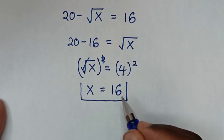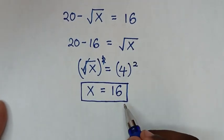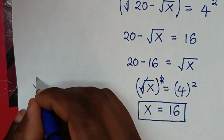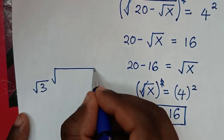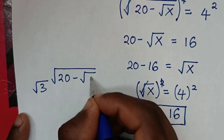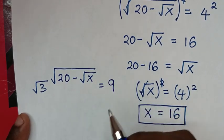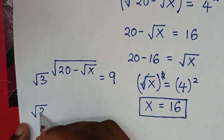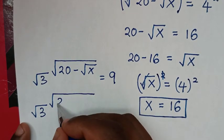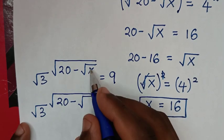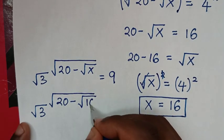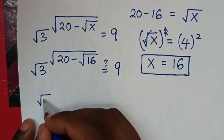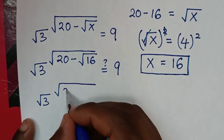Therefore, x equals 16 is the final answer. To verify this, we substitute x equals 16 back into the original equation: √3 raised to the power of (√20 minus √16) equals 9.